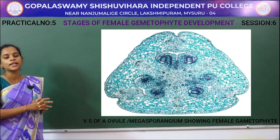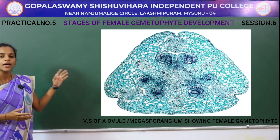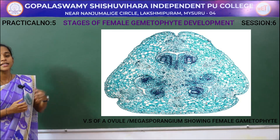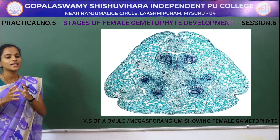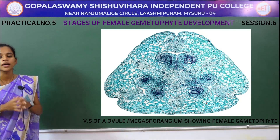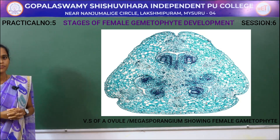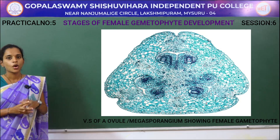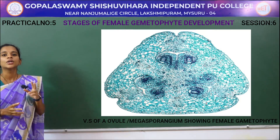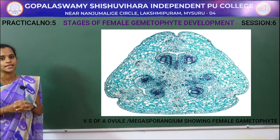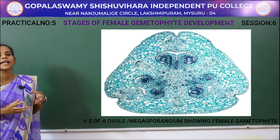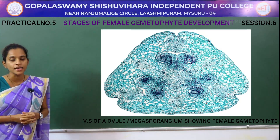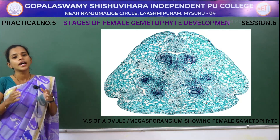Here in this diagram you have an ovary structure which contains the ovule. The ovule consists of two integuments and a nucellus. The nucellus helps in nourishing and developing the ovule, as it contains reserved food material.